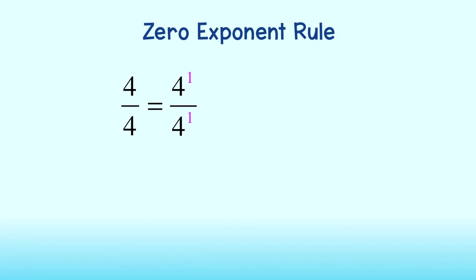Now, let's simplify using the quotient rule. The quotient rule tells us that to simplify, we subtract the exponents. Simplified, we get 4 to the zero power. Earlier, we also said this expression is equal to 1. Therefore, 4 to the zero power is also equal to 1.